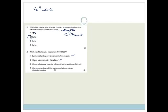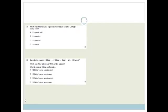And it says, Which one of the following statements is incorrect? Sunflower oil undergoes hydrogenation to form margarine is correct. Alkynes are more reactive than alkenes. That is correct. Alkynes will discolor a bromine solution without the assistance of a UV light. Alkanes undergo addition reactions. Alkanes cannot undergo addition reactions because they are single bonded. They can only undergo substitution reactions. So the correct answer is the incorrect statement, which is D.